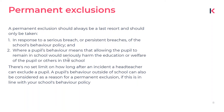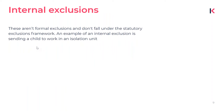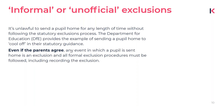You'll sometimes hear about internal exclusions. These aren't formal exclusions and they don't fall under the statutory exclusions framework. An example is sending a child to work in an isolation unit. You'll also hear about informal or unofficial exclusions — these are actually unlawful. It's unlawful to send a pupil home for any length of time without following the statutory exclusions process, even if the parents agree. Any event in which a pupil is sent home is considered an exclusion and all formal exclusion procedures must be followed.